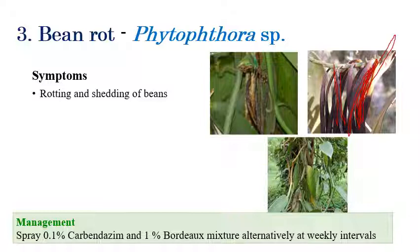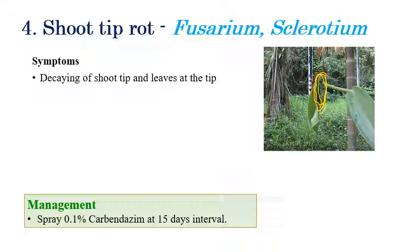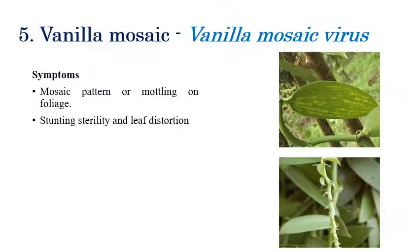Shoot tip rot is caused by Fusarium and Sclerotium species. Decaying of the shoot tip and leaves at the tip region can be seen. Spraying of carbendazim at 15-day intervals can check this disease.